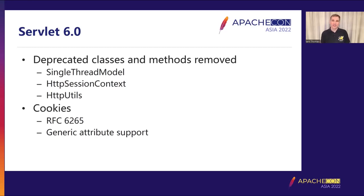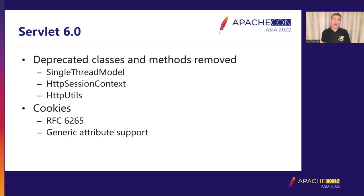RFC 6265 has now been fully adopted in Servlet 6 and is the only cookie specification referenced throughout the spec. One of the past challenges was that new standard cookie attributes — normally added for security reasons — required adding new individual getters and setters, forcing a wait for the next spec version. We've now switched to a generic way of adding attributes: you just specify the attribute name and value. This should make us reasonably future proof if additional attributes are defined.